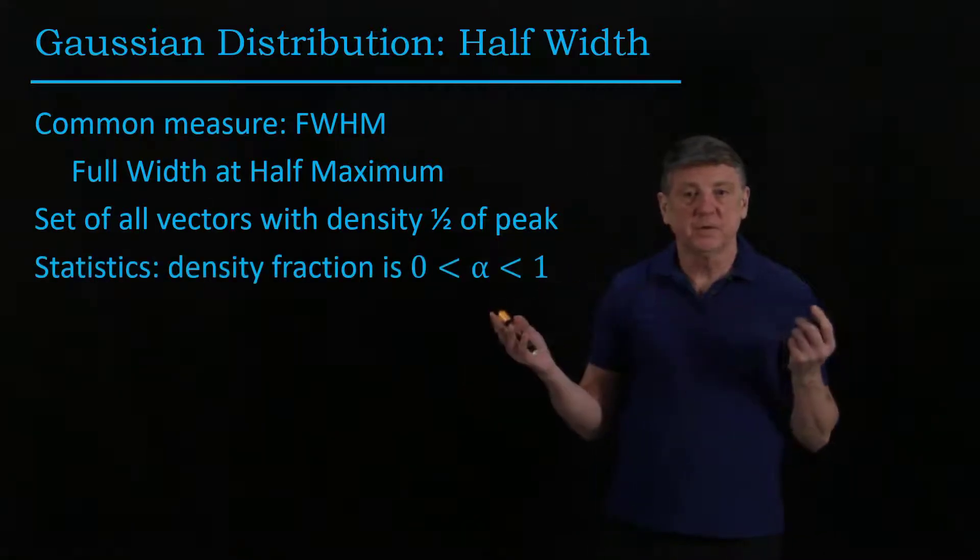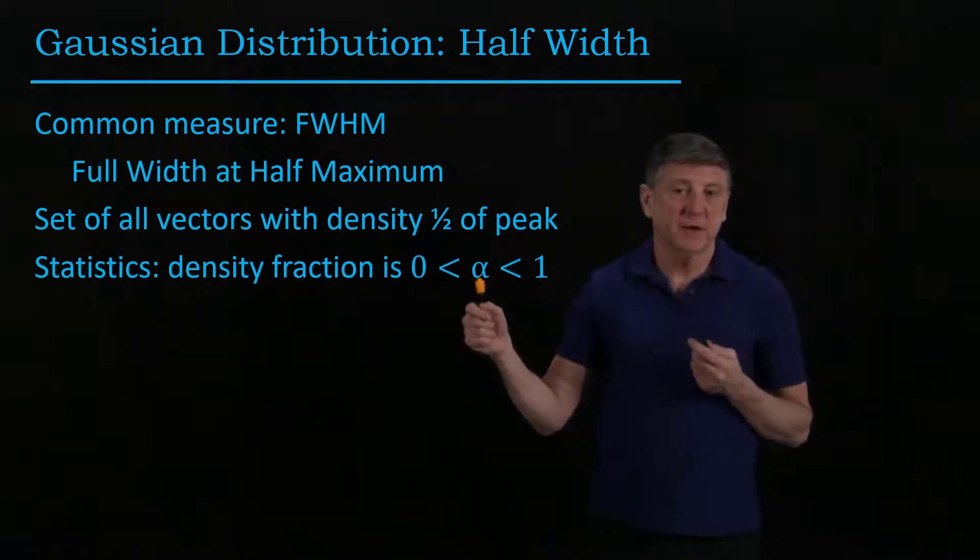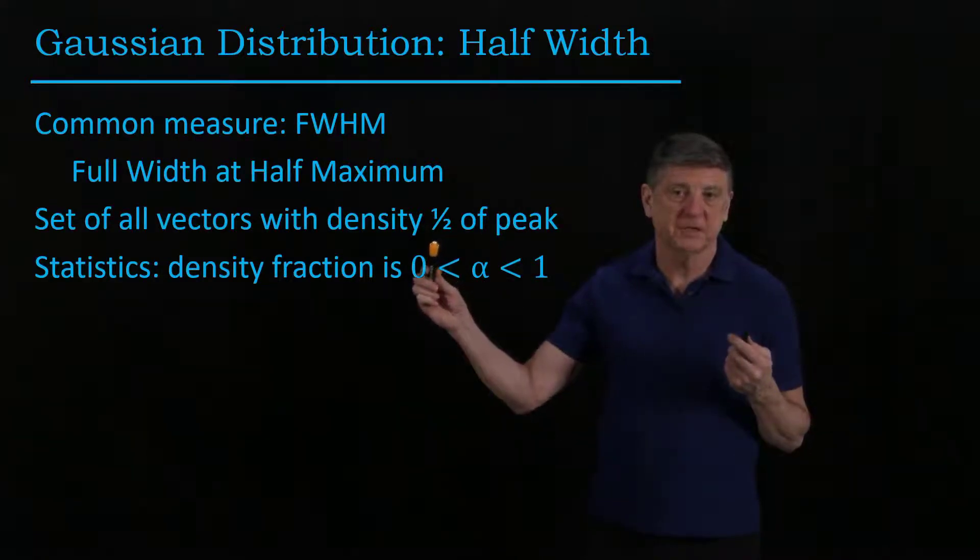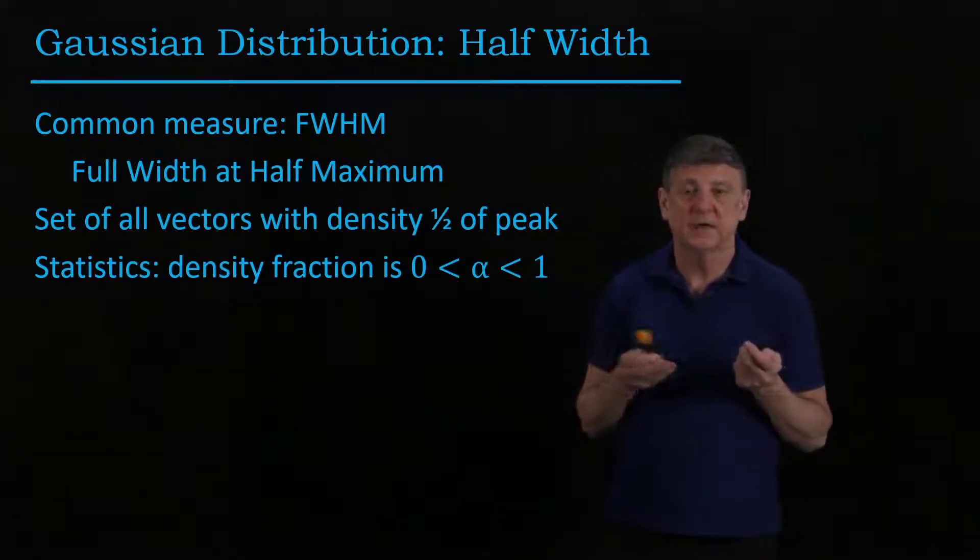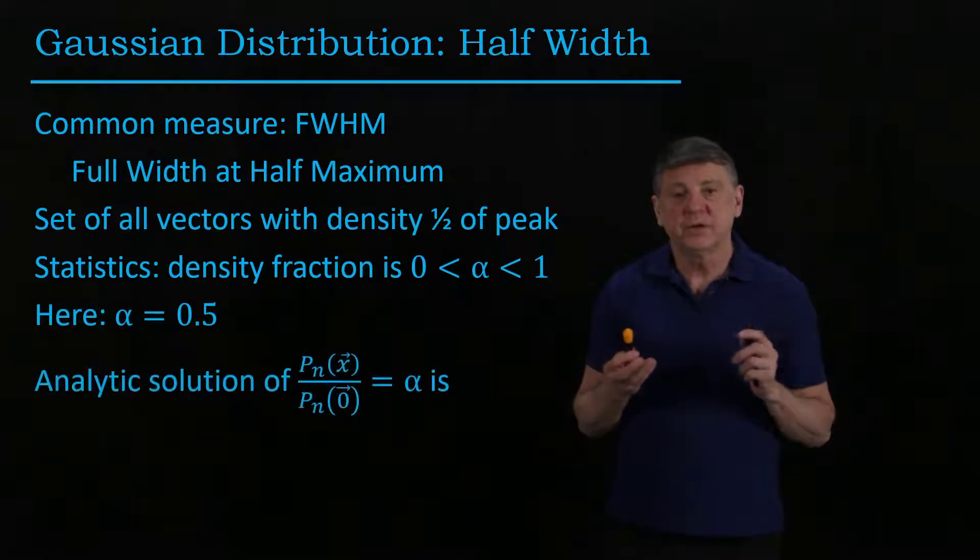So what we do is we suppose that there's some value alpha, we're going to take alpha equal to one half, because that's the usual way to look at it.